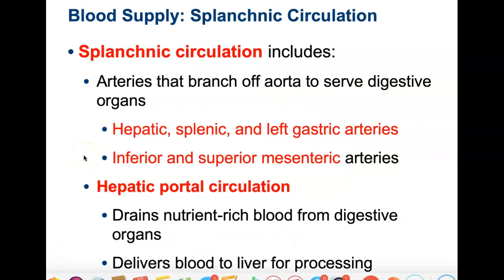We have to talk about splanchnic circulation. These are the branches that come off of the abdominal aorta serving the digestive organs. The hepatic, splenic, and gastric arteries all come off something called the celiac trunk. Hepatic leads to the liver, splenic to the spleen, and gastric to the stomach. Also coming off the abdominal aorta, you have the inferior and superior mesenteric arteries, which feed the large and small intestines.